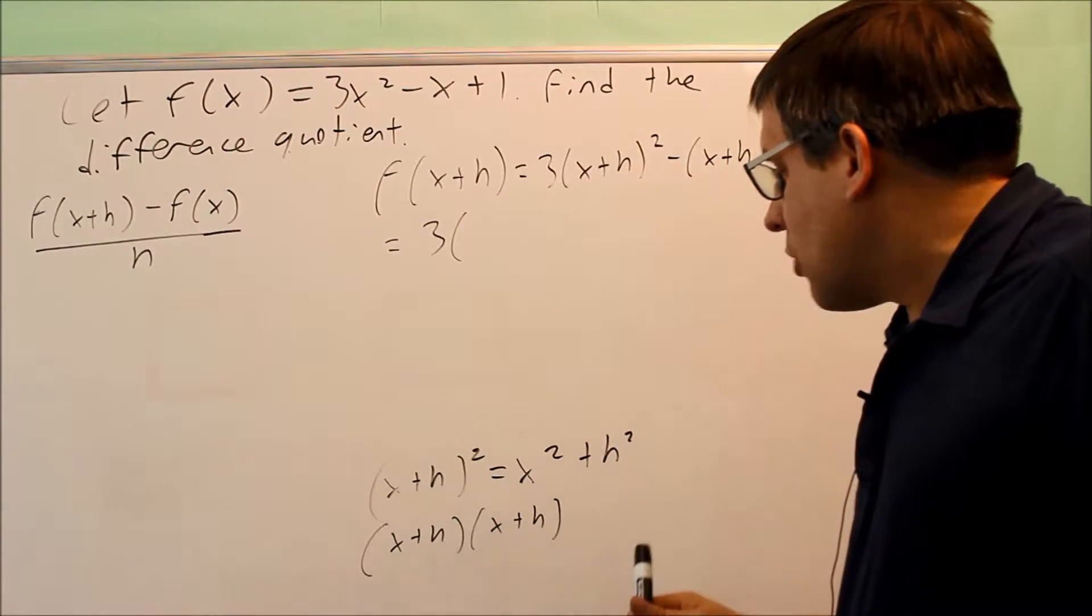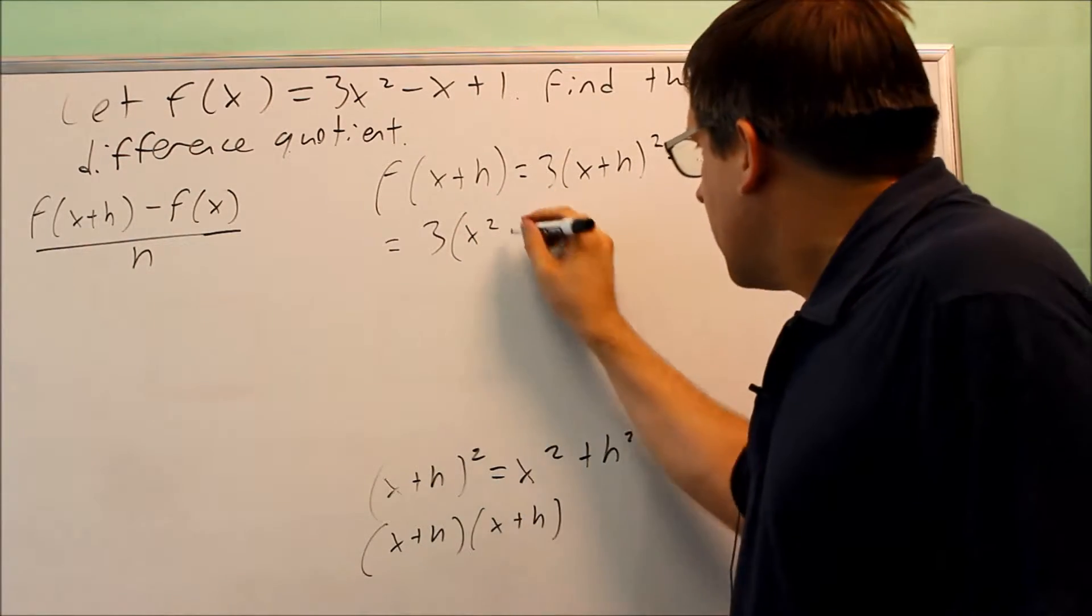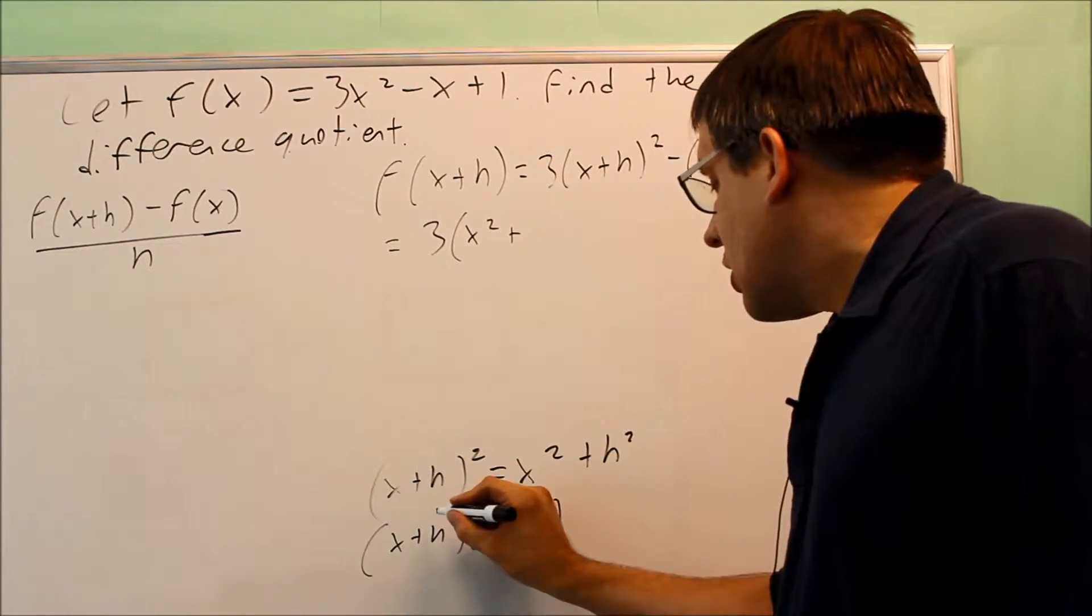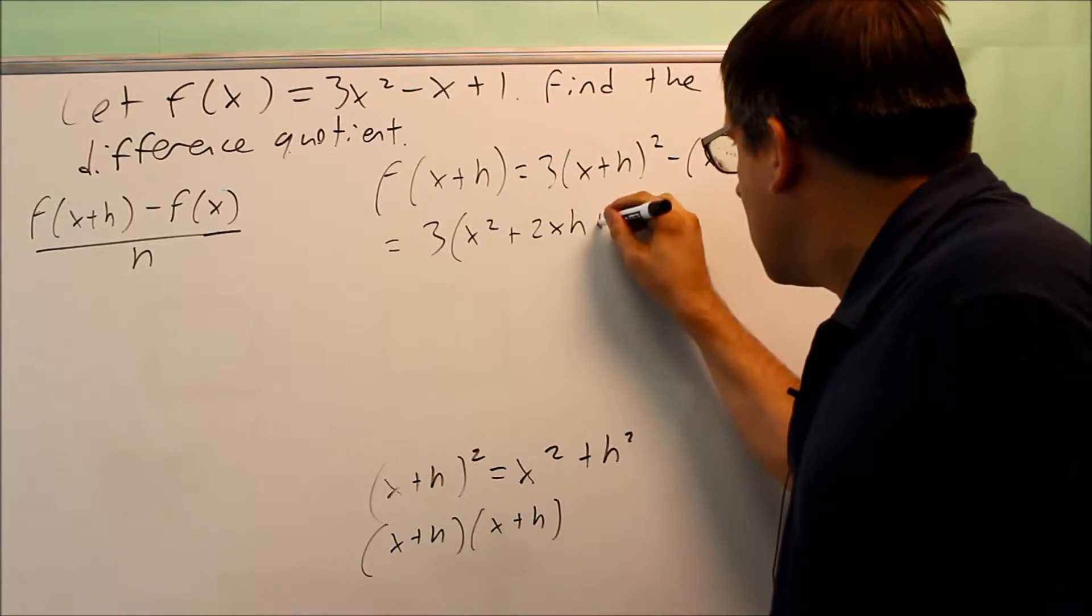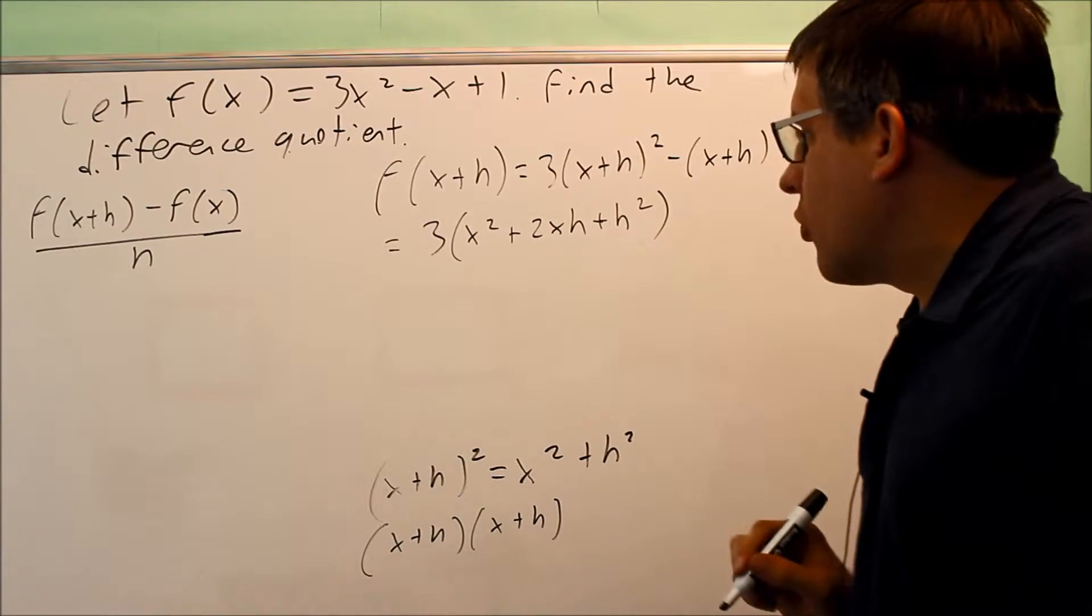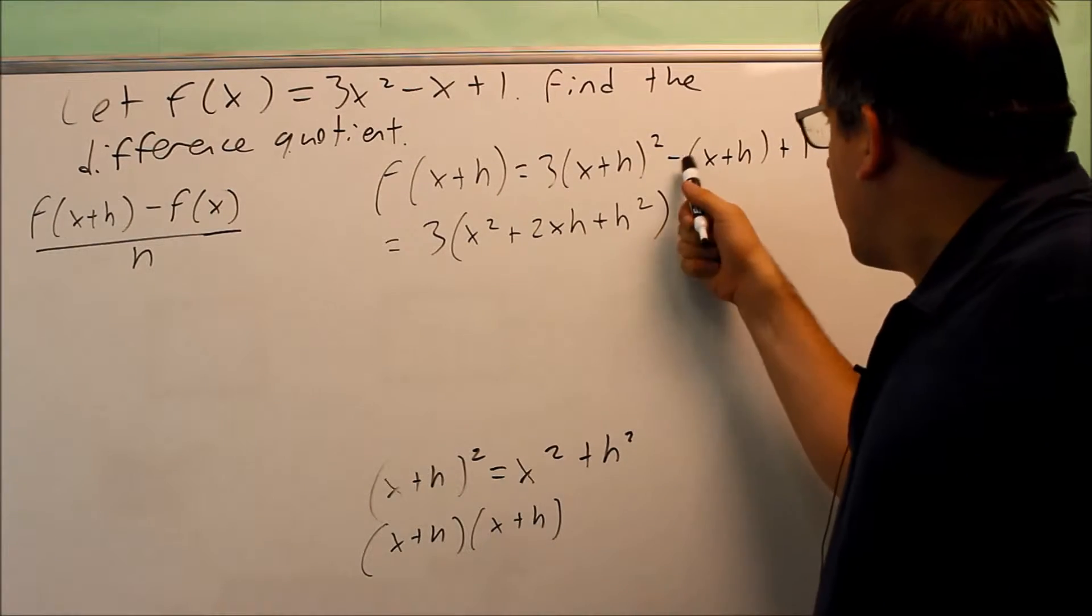So up here what we do first is I have a 3, but then I'm going to go ahead and multiply out the x plus h squared. That's these two things multiplied together. I get x squared, I get xh, xh, that's 2xh, plus h squared. So that's the correct way of doing it.